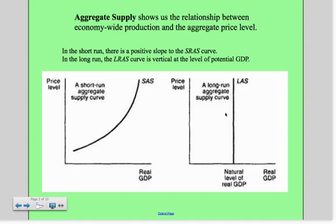In the long run, the curve is actually vertical at something called the natural level of GDP. We're going to handle each of these separately — why the curve has a positive slope in the short run, and why the curve would be vertical in the long run.